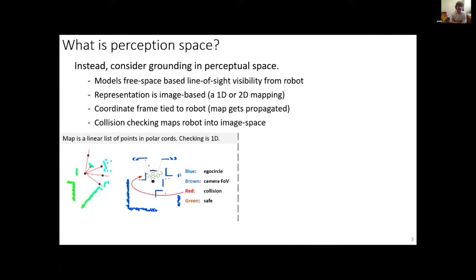The nice thing is that it's image-based. If you have a planar world that requires 2D collision checking, in perception space it would be 1D — you drop down one dimension. In 3D it would be 2D. The reason is that instead of mapping the robot into the world, you map the robot back into the image plane. You can think of it as mapping the world as a bunch of z-buffers.